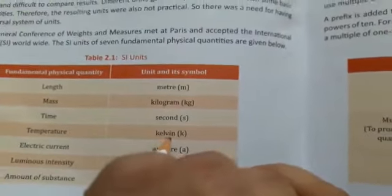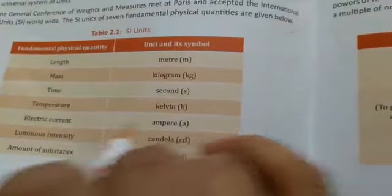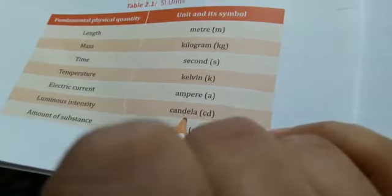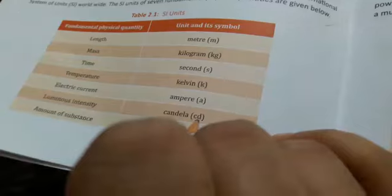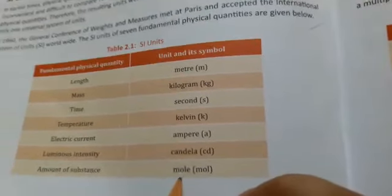Temperature: Kelvin, K. Electric current: ampere, A. Luminous intensity: candela, CD. Amount of substance: mole.